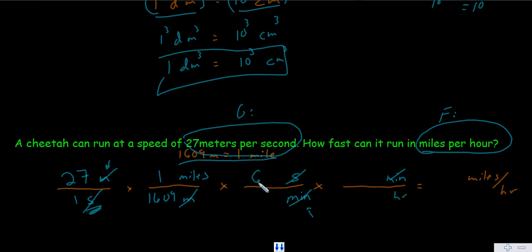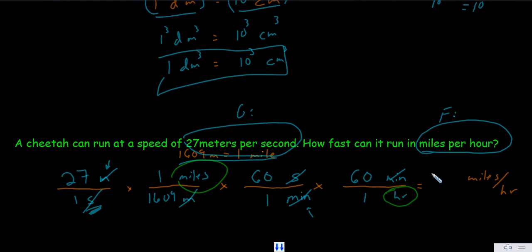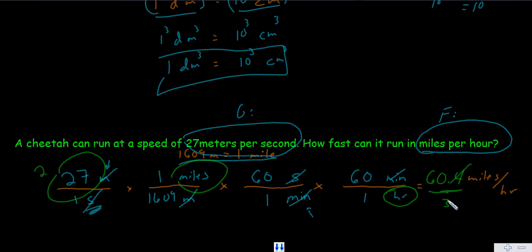Now let's plug in numbers. There are 60 seconds per one minute, and 60 minutes per one hour. The only units remaining are miles over hours, giving us miles per hour. To calculate: multiply 27 by 60 by 60, then divide by 1,609, and your calculator gives 60.4. But is this the best way to express the answer? No — how many sig figs are in 27? Just two. Our answer should also have two sig figs. Writing '60' has only one sig fig, so instead write 60. (with a decimal) or 6.0 × 10¹ miles per hour.